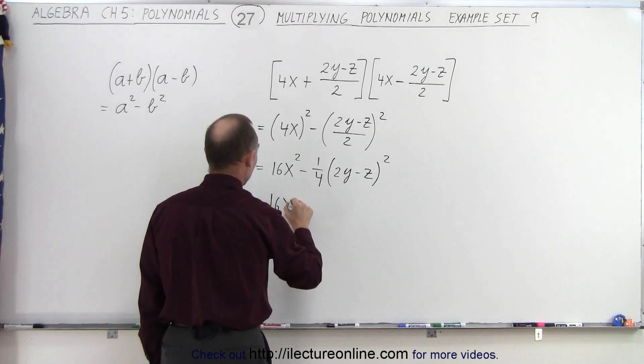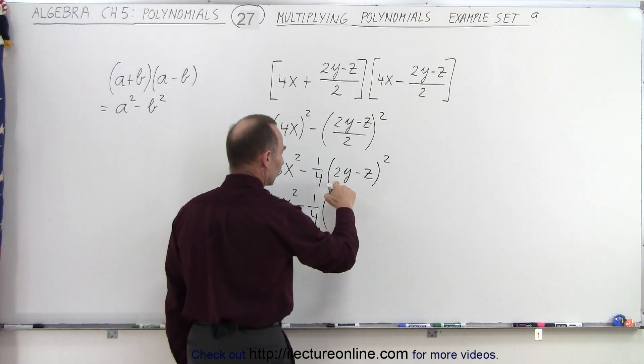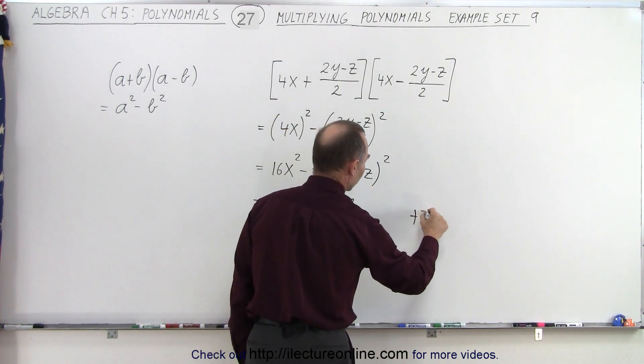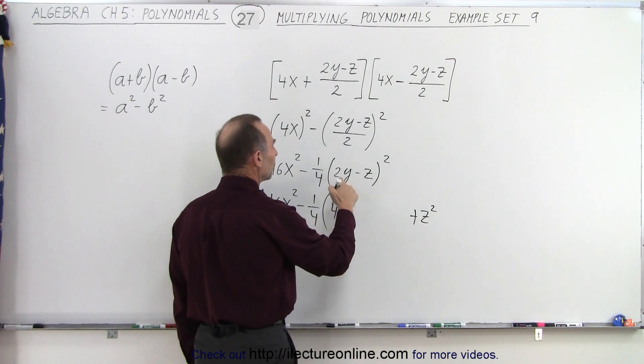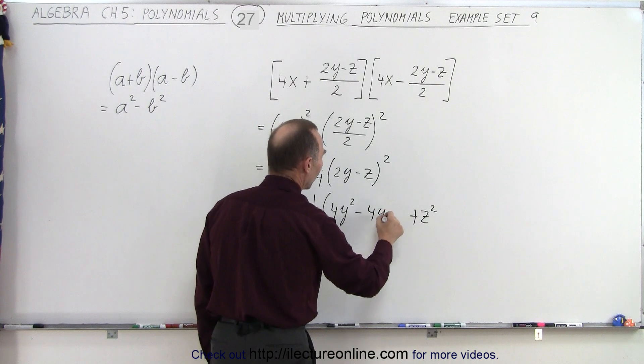This is equal to 16x squared minus 1 quarter times the first term squared, which is 4y squared, plus the last term squared, plus z squared, times 2 times the product of these two. That would be a minus 2yz times 2, which is a minus 4yz.